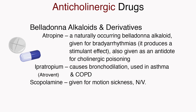Specific examples of anticholinergic drugs include belladonna alkaloids and derivatives such as atropine, a naturally occurring belladonna alkaloid given for bradyarrhythmias, which produces a stimulant effect and is also given as an antidote for cholinergic poisoning. Ipratropium, or Atrovent, causes bronchodilation and is used in asthma and COPD. Scopolamine is given for motion sickness and nausea and vomiting.